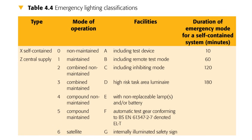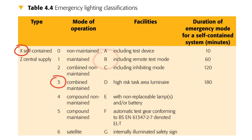One further thing to note about this table is that it's used to create codes that identify the characteristics of emergency lighting. So rather than reading each row from left to right — which could fool you into thinking that all self-contained non-maintained emergency lights include test devices and only need to last 10 minutes — each characteristic is selected by column and then combined to give a code that tells you information about the emergency light.